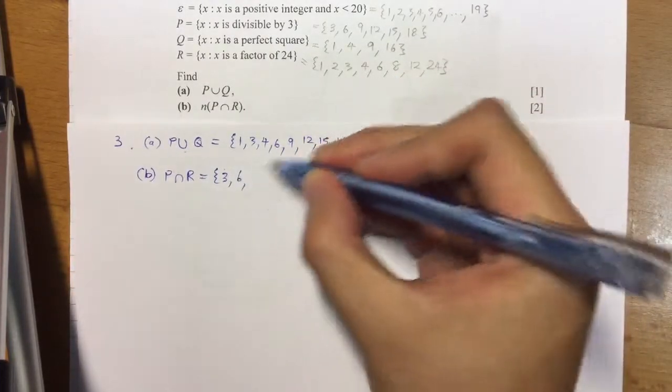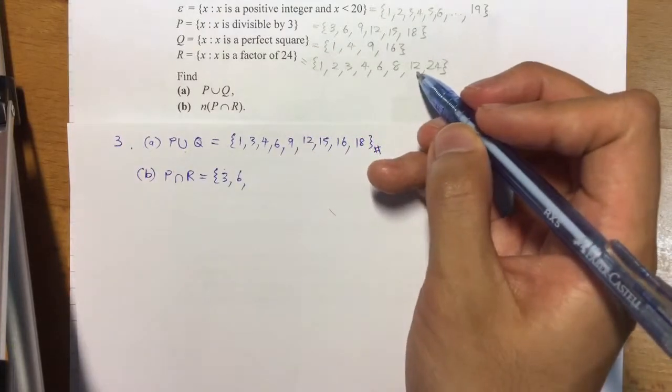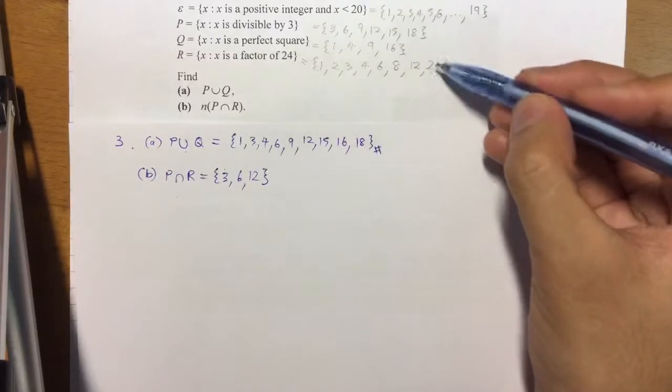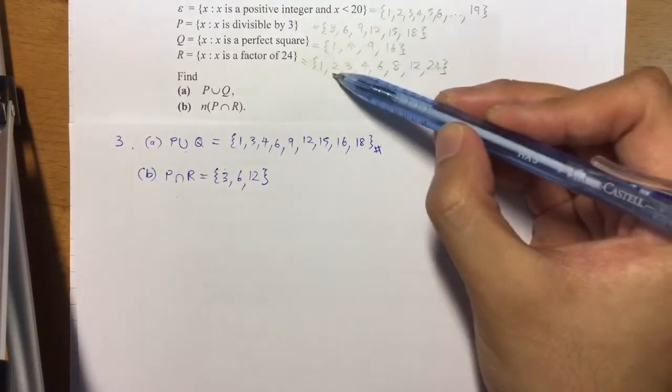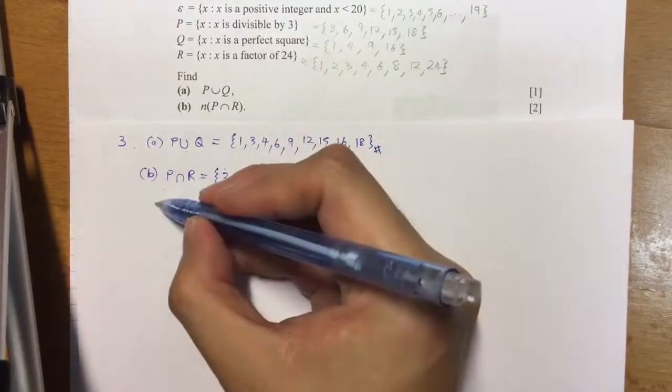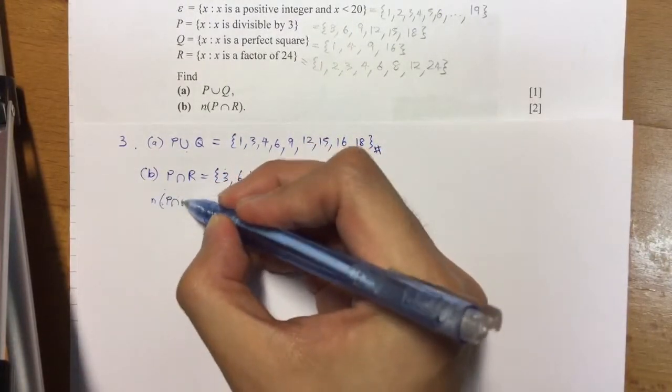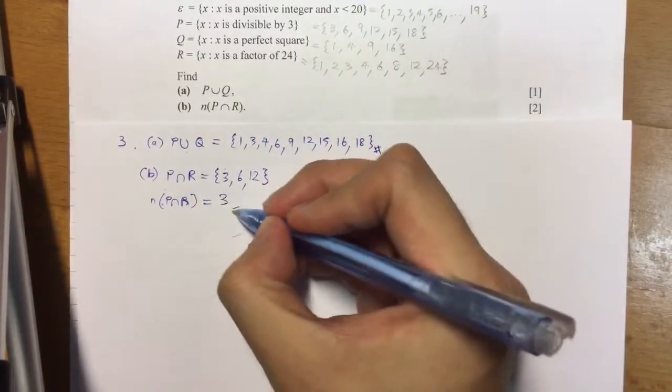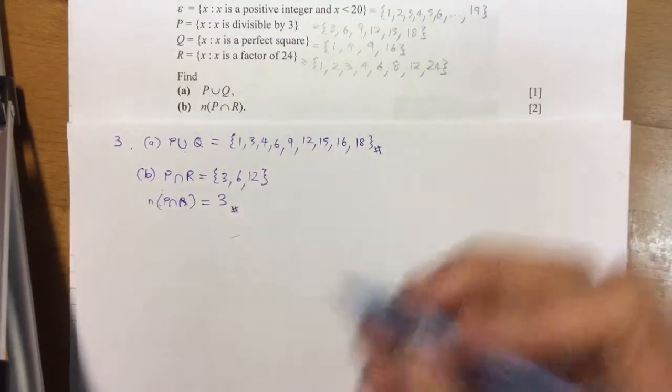We have 12, and that's it. Double check again: 3, 6, 12. Anything else? None. So we have the whole set of P intersect R. So the number of elements inside P intersect R simply is 3—three elements inside here, and that's it.